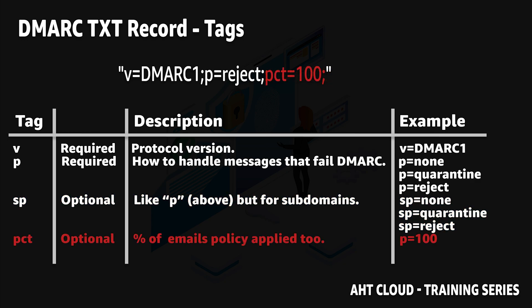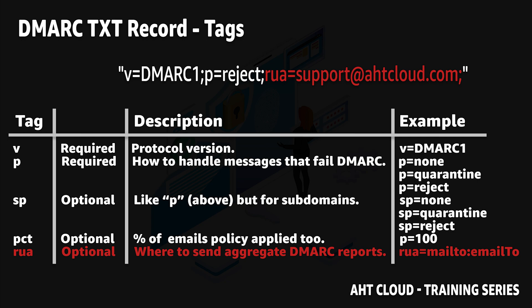The pct tag is an optional tag that allows you to specify the percentage of email messages to which your stated DMARC policy applies. The value can be anywhere from 1 to 100 percent. I always recommend you set this field to 100 percent — this tells the email receiver to reject 100 percent of emails that fail DMARC authentication.